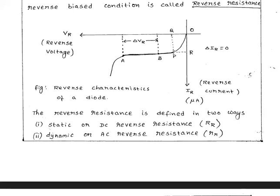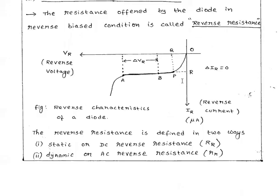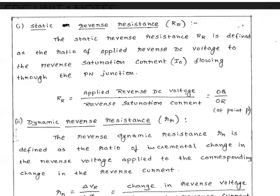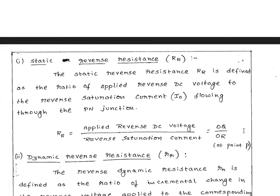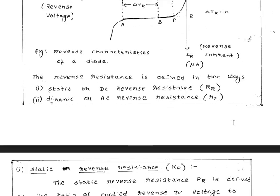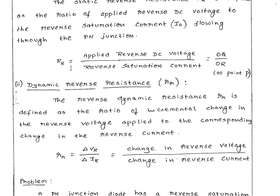The dynamic AC reverse resistance is defined as the ratio of the incremental change in reverse voltage to the corresponding change in reverse current: ΔVR / ΔI. The reverse resistance is also inversely proportional to the slope of the VI characteristics. This covers resistance in both forward bias and reverse bias.